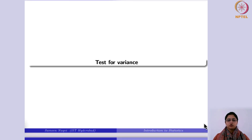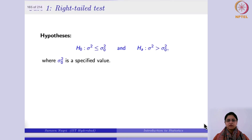Now we are going to talk about the test for variance. We will have the right-tailed test, left-tailed, and two-tailed. The difference here would come in the hypothesis — instead of the parameter mu, you would have sigma squared — and the test statistic would vary accordingly.